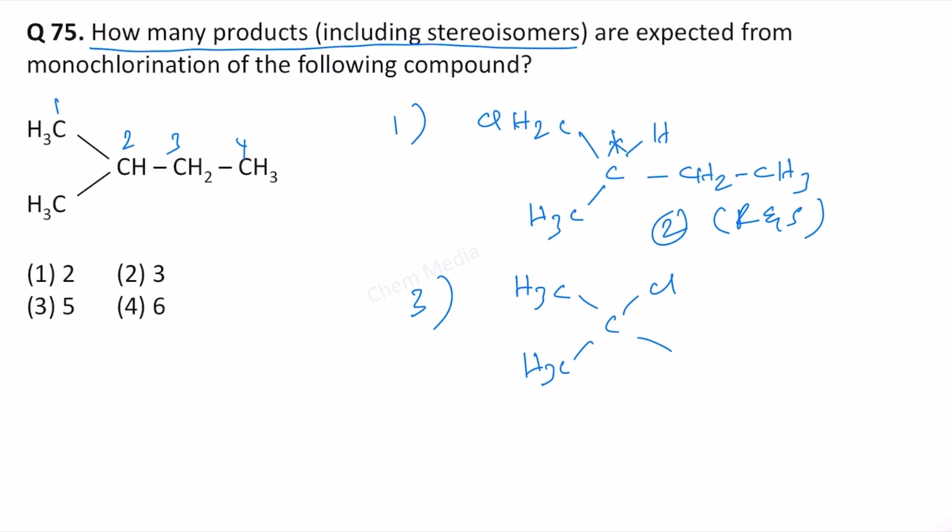So basically what we have is 2-chloro-2-methylbutane. And then let's replace one hydrogen atom at position 3.